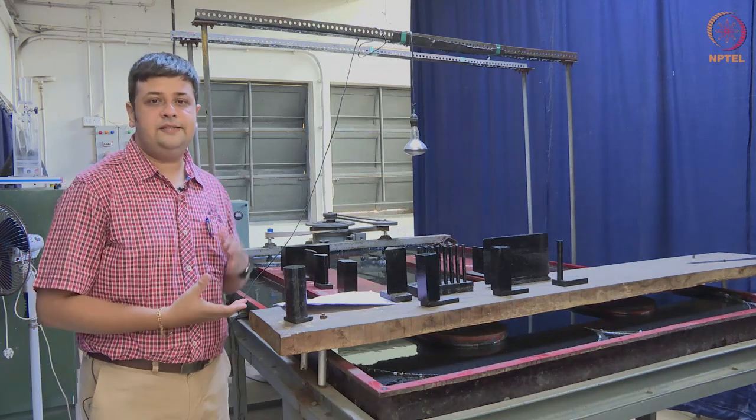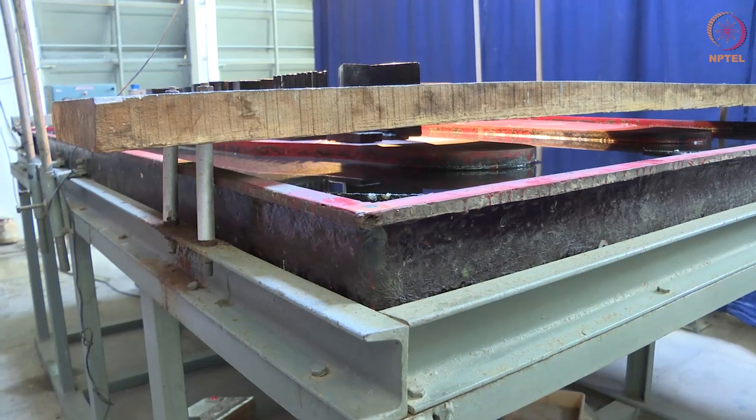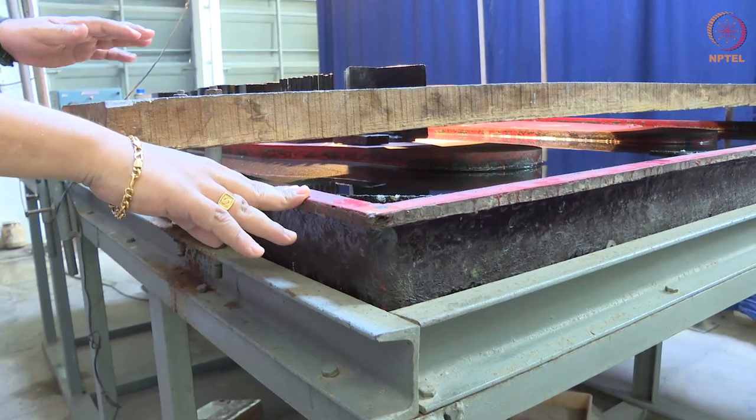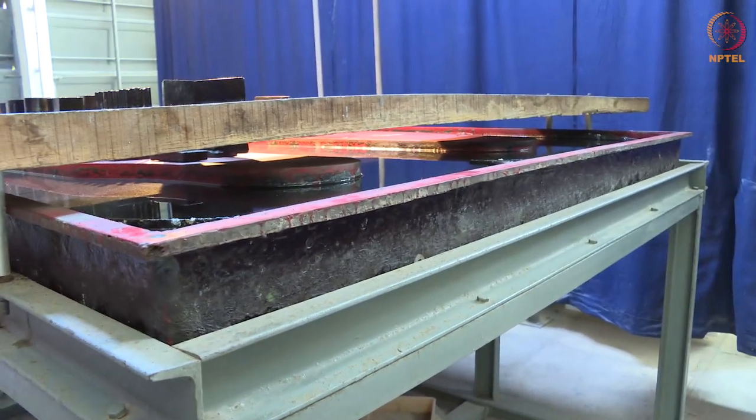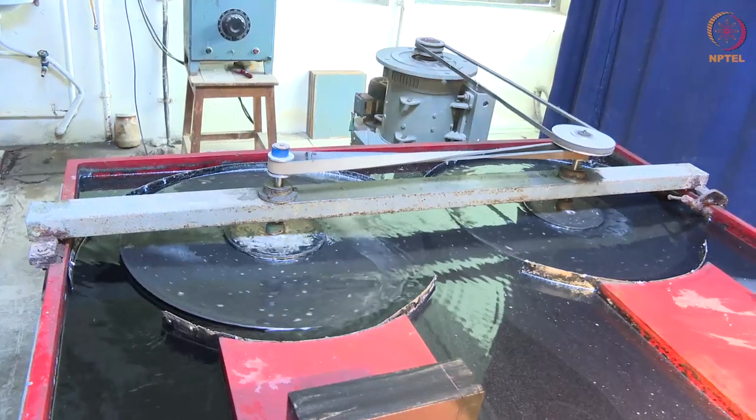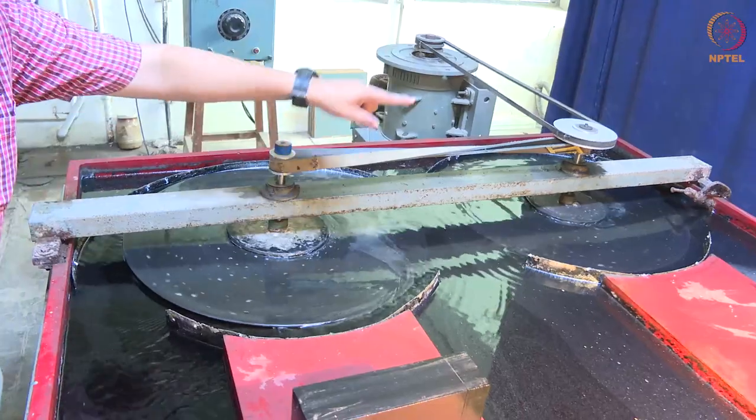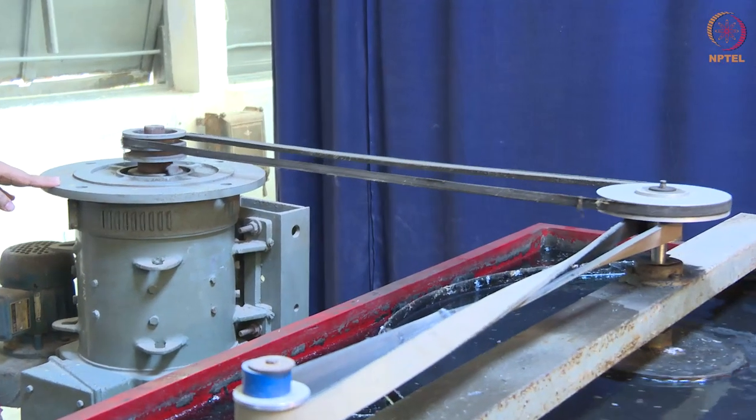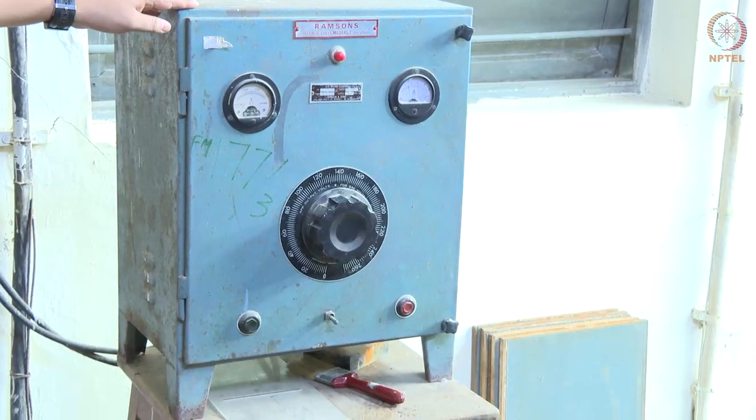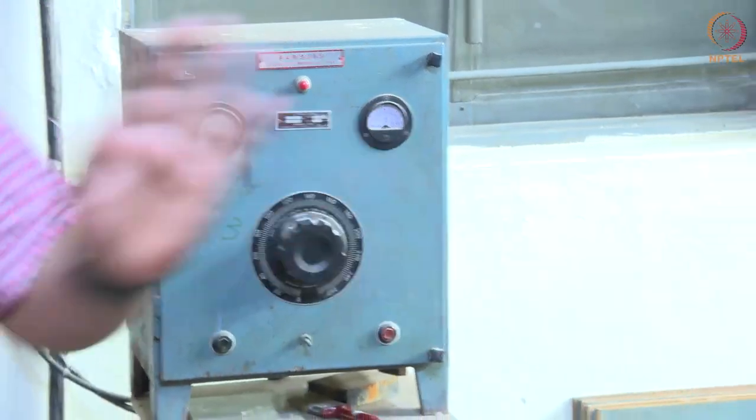Now let us see the experimental setup. The experimental setup consists of a tank having a dimension of 2.5 meters by 1.5 meters and a depth of 150 millimeters. It consists of two counter-rotating aluminum discs which are connected to a motor, and this motor is connected to a variac from which we can control the speed of the motor which in turn controls the velocity in the stream.